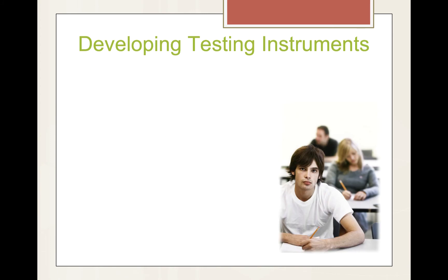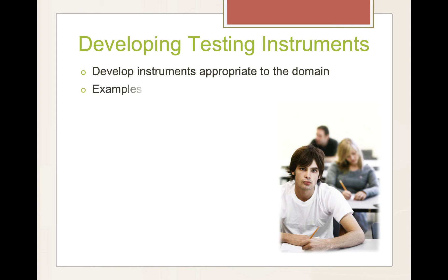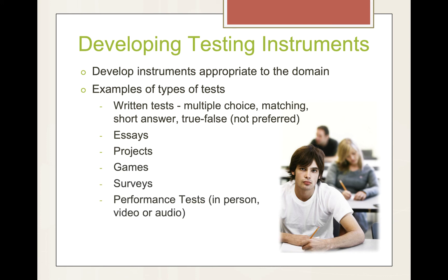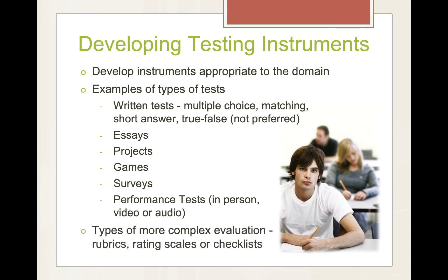In developing your testing instruments, you want to develop those instruments to the appropriate domain. Examples of types of tests include written tests: multiple choice, matching, short answer, and true-false, although true-false are not preferred. This is a very efficient way to test whether your instruction works. You might also use essays, projects, games, surveys, and performance tests, either in-person, video, or audio. There are also more complex evaluation tools like rubrics, rating scales, or checklists.